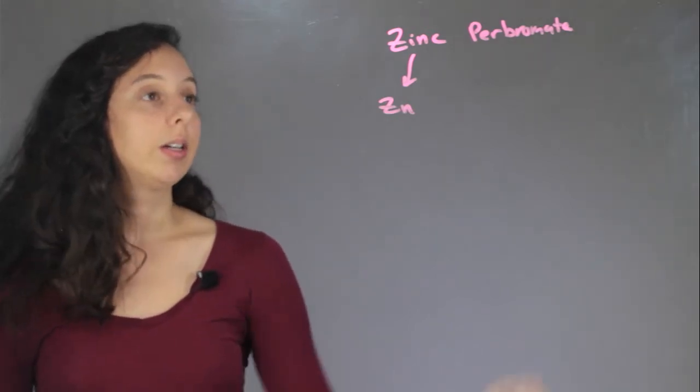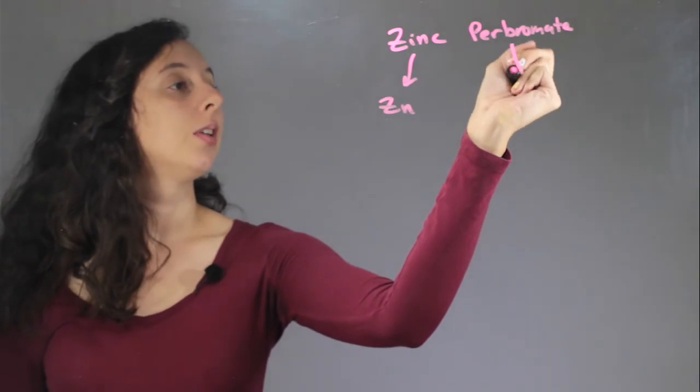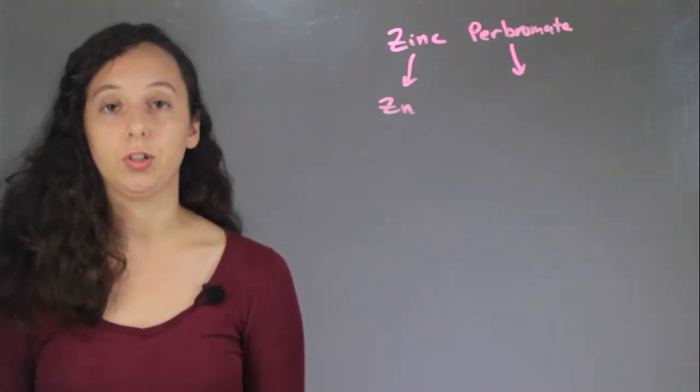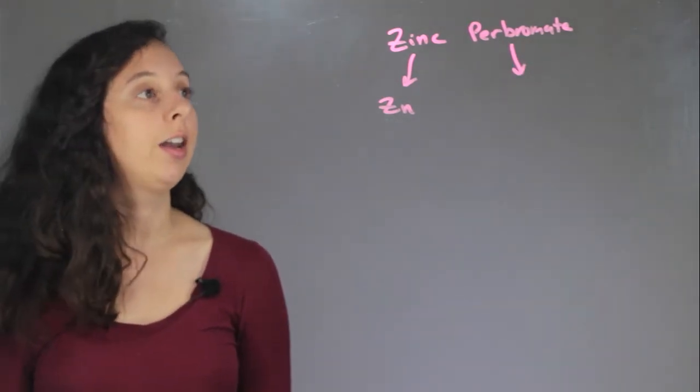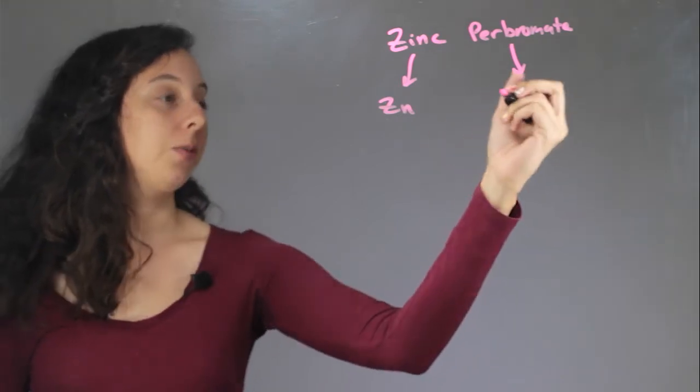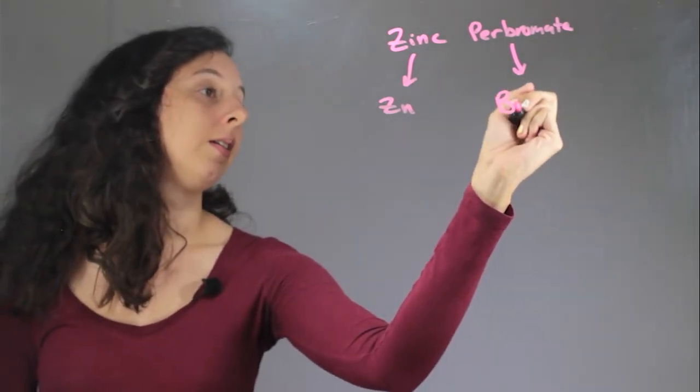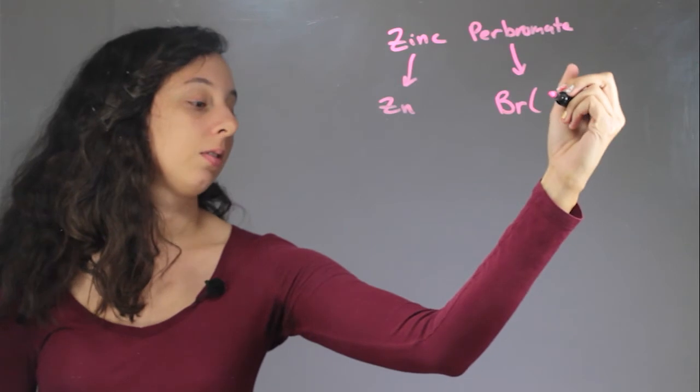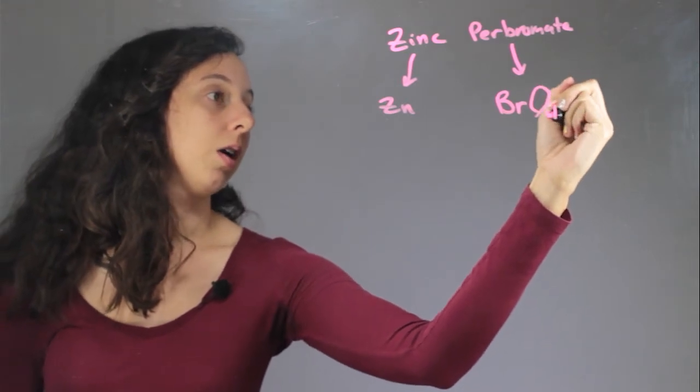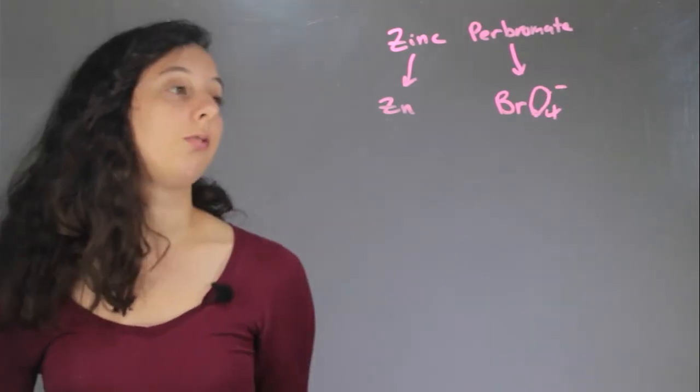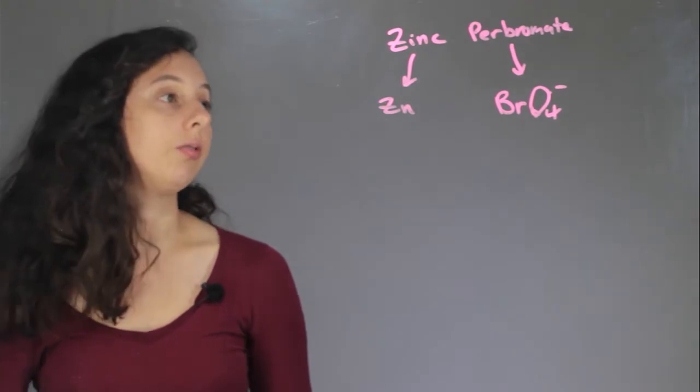Now perbromate, in case you didn't memorize your list of common ions, which is totally fine, then we're going to have to look that up. If you look it up, you'll find that perbromate means anything with this, BrO4. So it's one bromine, four oxygens, and it has a charge of negative one.